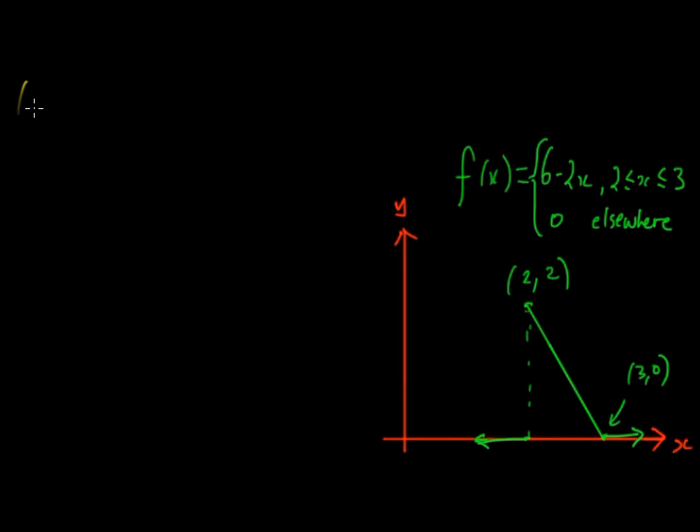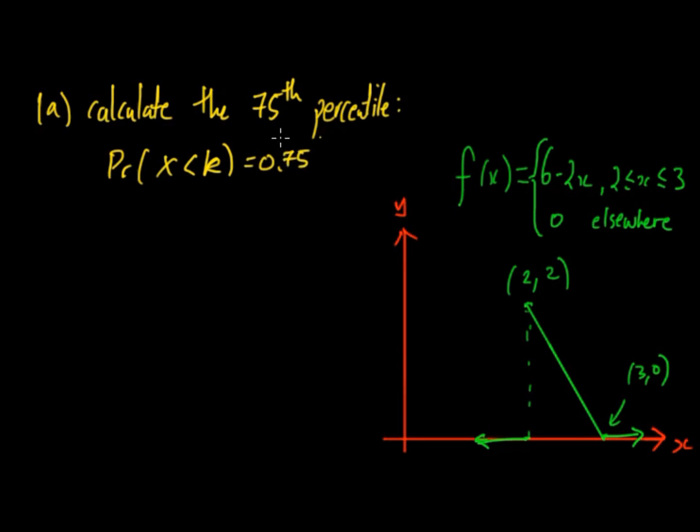So what about if we had to calculate the 75th percentile. We have to think that the probability of x being less than K has to equal 0.75. And then K is the 75th percentile. So we'll let that equal K.